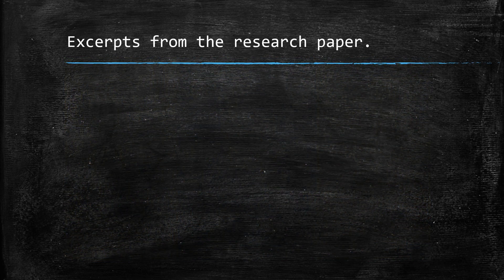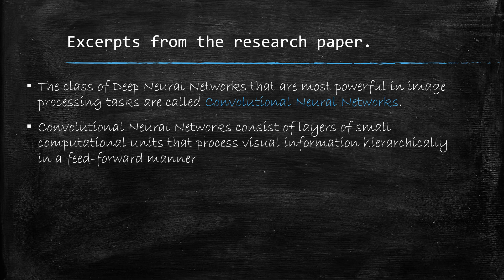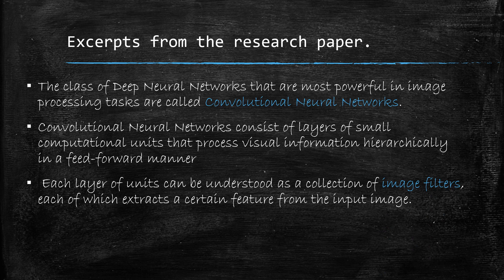To better understand the research paper, here are a few excerpts. The technique uses a class of deep neural networks that are most powerful in image processing tasks — these are called convolutional neural networks. CNNs consist of layers of small computational units that process visual information hierarchically in a feed-forward manner. Lower layers learn less important features such as edges or pixel values, while higher layers learn about shapes and more semantic features — they care about the actual content, not just the pixels.